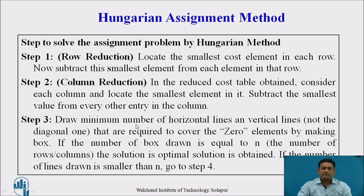In step three, after obtaining the row and column reduction table, draw the minimum number of horizontal or vertical lines to cover all zero elements, marking covered zeros with a box. If the number of boxed zeros equals the number of rows or columns, the optimal solution is obtained. If not, we proceed to step four.